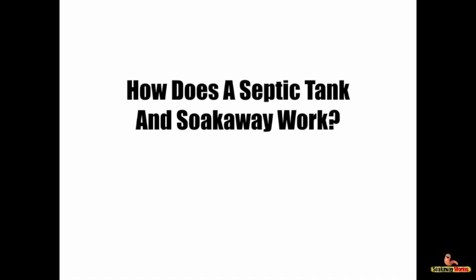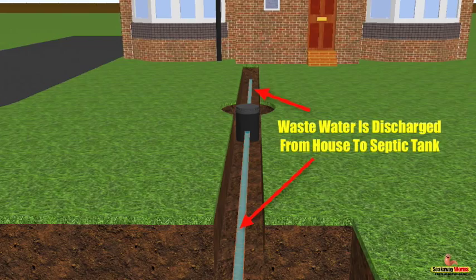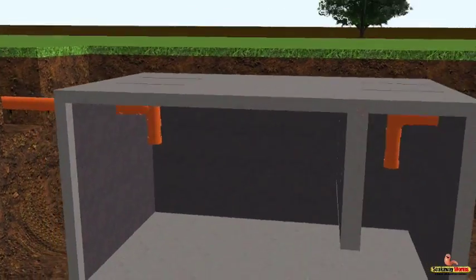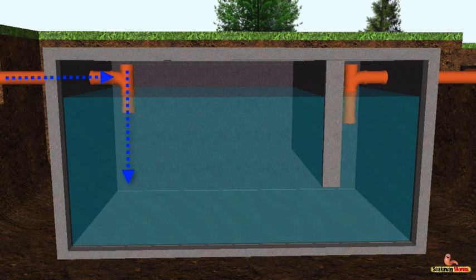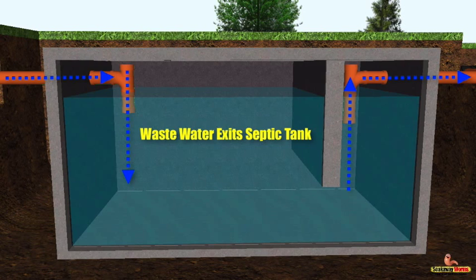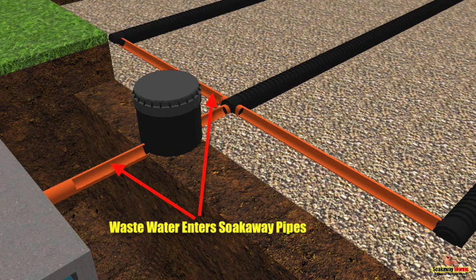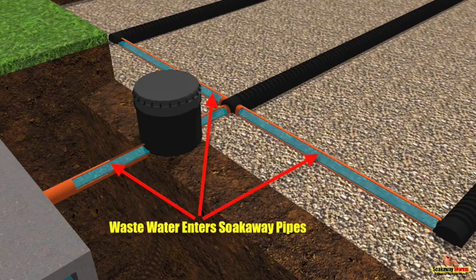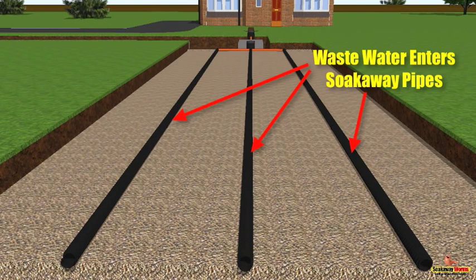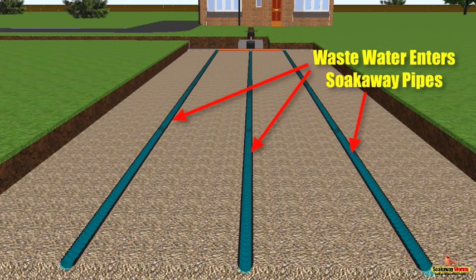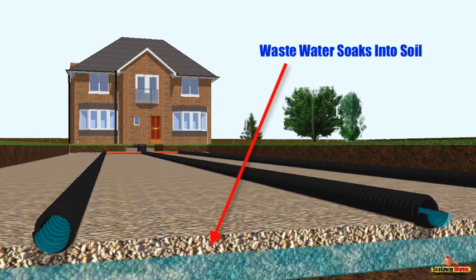How does a septic tank and soak away work? Well, it's quite simple. Wastewater is discharged from a property towards the septic tank. The wastewater then enters the septic tank from the house, fills up and exits via the outlet pipe. The wastewater then leaves the septic tank, enters the soak away system, makes its way through the soak away pipes, and is then slowly but naturally discharged into the gravel and soil.